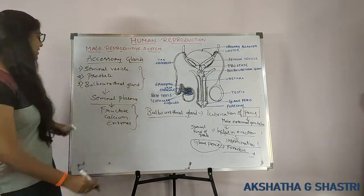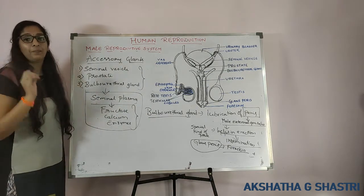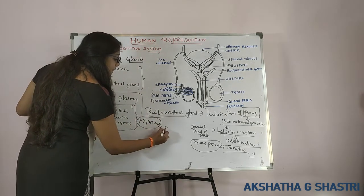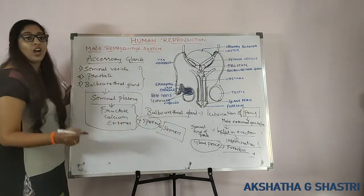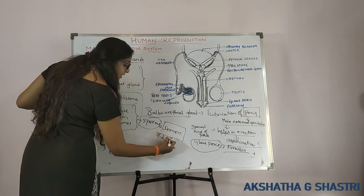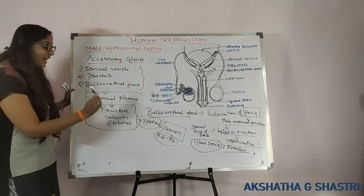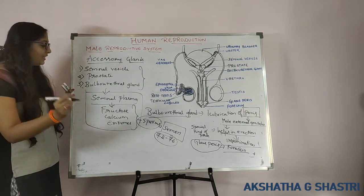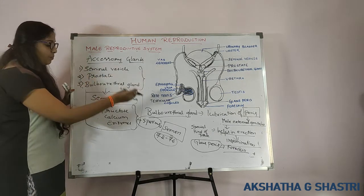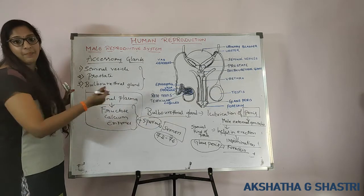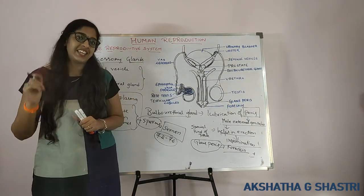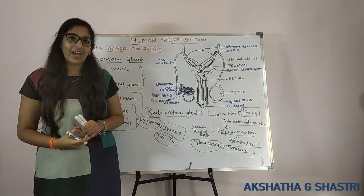Let us recall about seminal plasma. Seminal plasma along with sperms forms semen, which is a slightly alkaline fluid with a pH of 7.2 to 7.6. Semen contains mainly sperms along with seminal plasma, which is the secretion of the male accessory glands. So: sperms plus seminal plasma equals semen. The male accessory ducts and glands are all maintained by the male sex hormone androgens.